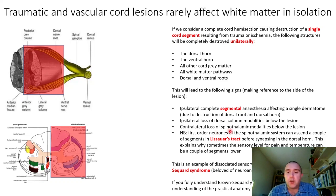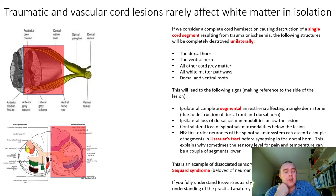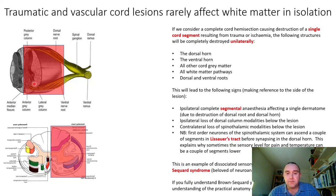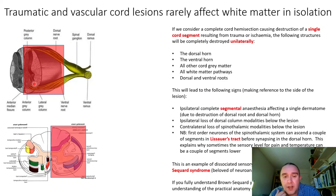Next, we would have contralateral loss of spinothalamic modalities below the lesion. The spinothalamic tract contains second-order axons which had already decussated at the level of the cord where their first-order neuron entered — so this tract contains information from the contralateral half of the body below the lesion. There is also something important to appreciate: the sensory level — the lowest level of normal function for spinothalamic modalities — may be lower than for dorsal column modalities. This is a direct consequence of Lissauer's tract.